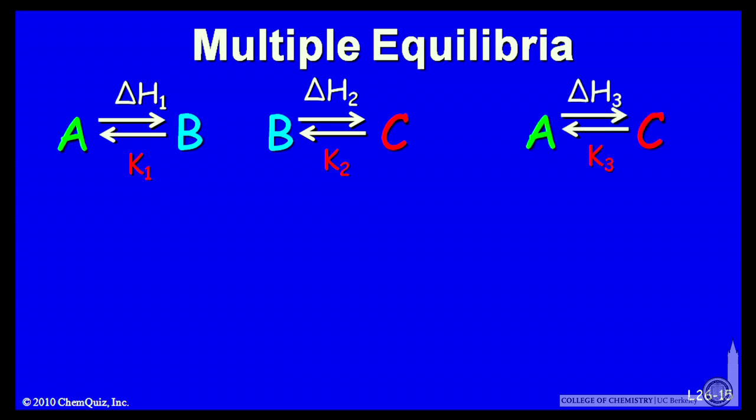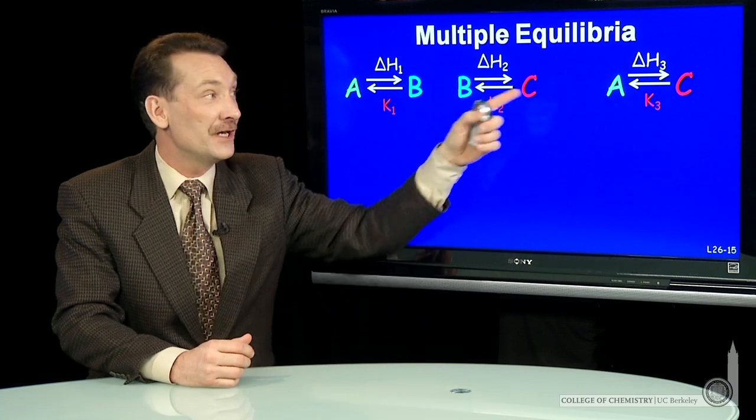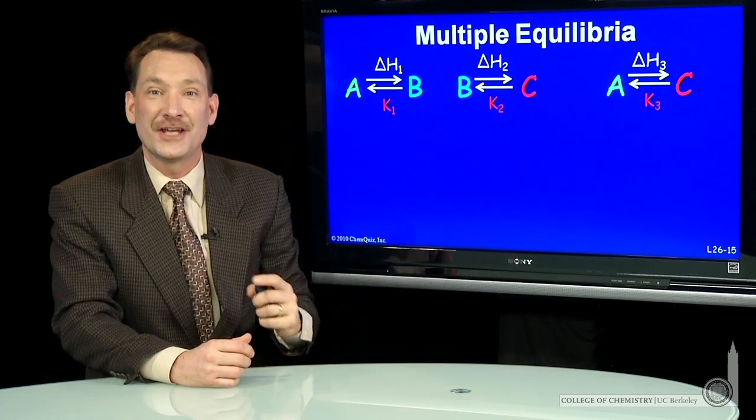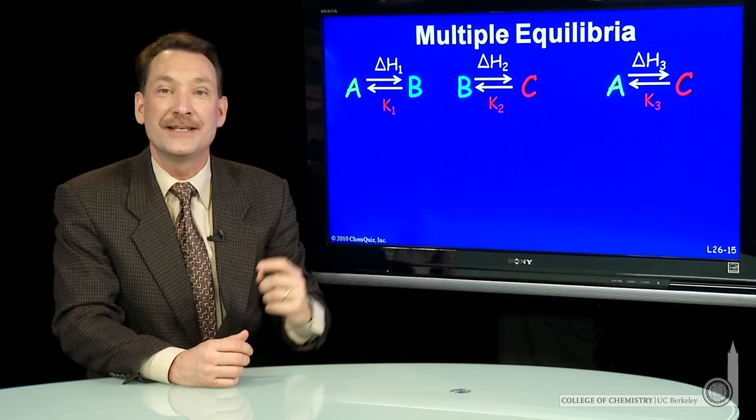And then A going to C would be the full reaction, A to C. That has equilibrium constant K3 and delta H3. So how are K1, K2, and K3 related?